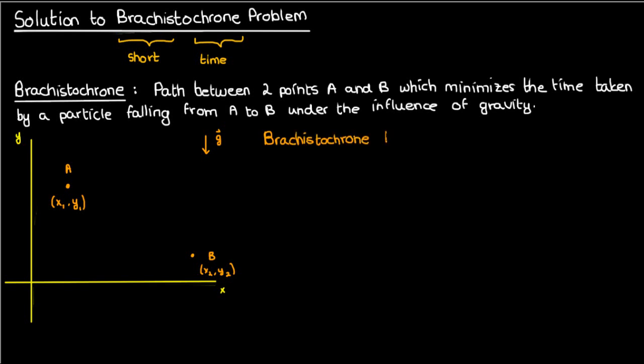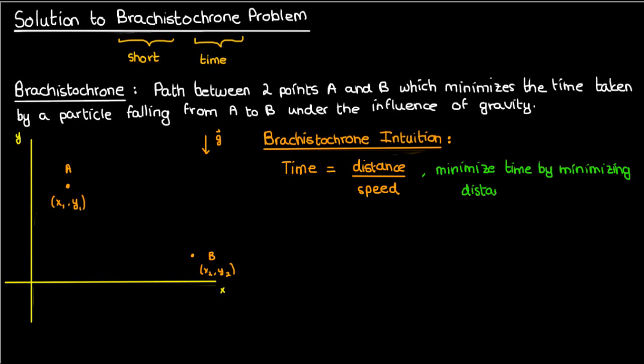There's also a gravitational field in the vertical direction acting downwards. Now before we actually solve any equations I want to give you some intuition of what a brachistochrone would look like. You probably know from basic physics that time is just distance divided by speed, so if we want to find a brachistochrone that effectively minimizes the time of travel, one option is to minimize the distance of travel and say that our brachistochrone is just a straight line.